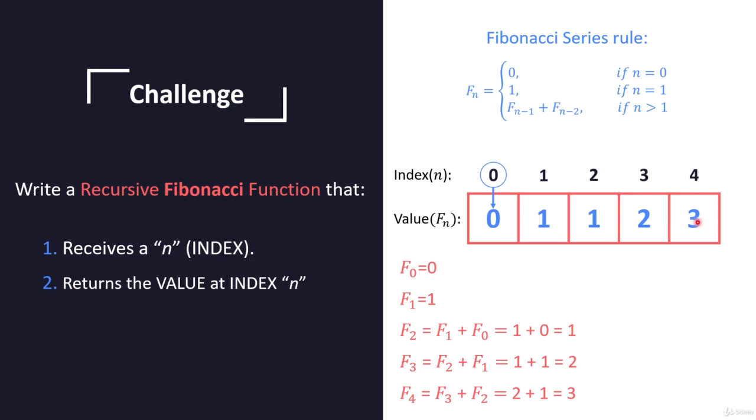And what you have to do is to write a recursive function, a recursive Fibonacci function that will get some n, some index, and it will find out and return the value at index n. So if it will receive an index of three, if it will receive n equals three, then the function is going to return two. And if the function will receive n, for example, five, so the function will return five.